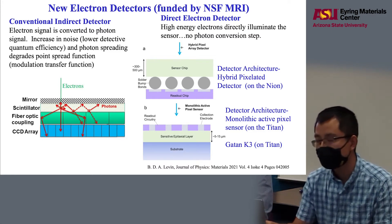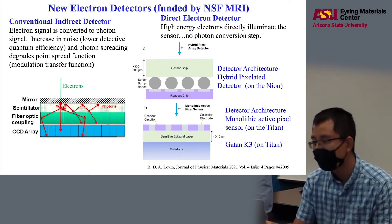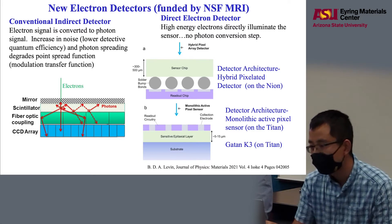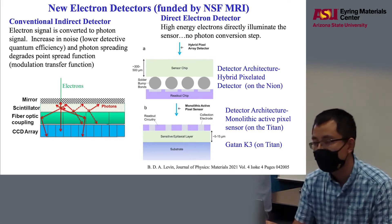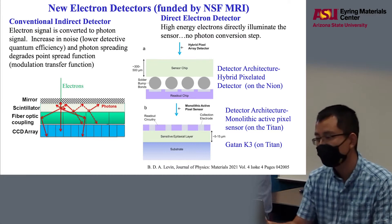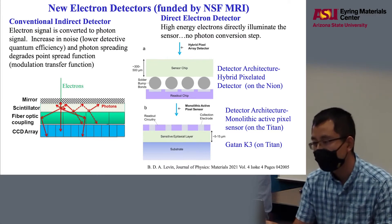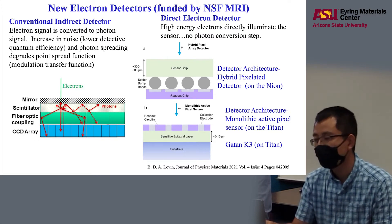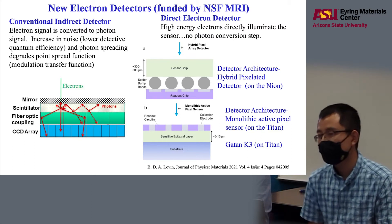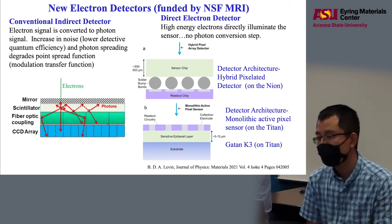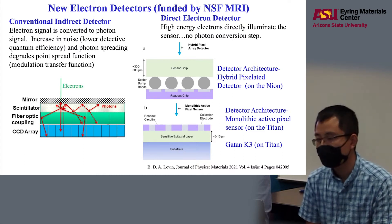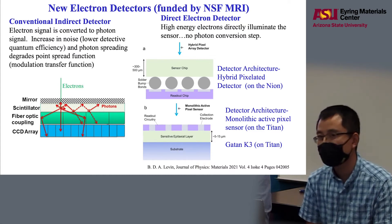For the Titan microscope, we have the Gatan K3 direct detector. The architecture is different — the readout circuit is exactly on top of the detector, very close to the interaction region with the electron beam. This architecture provides ultimate spatial resolution, but the issue is that it is only sensitive to high voltages. For example, if you do 80 kV imaging, the K3 won't help you.